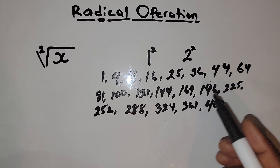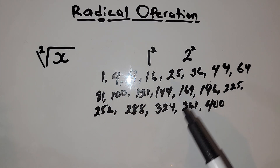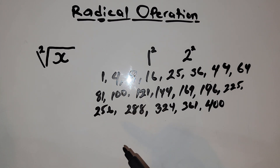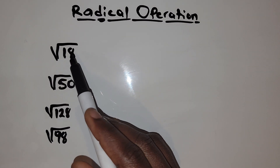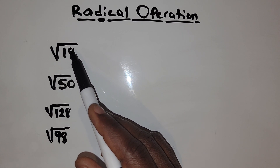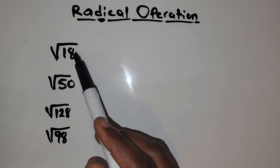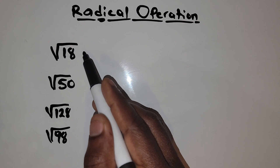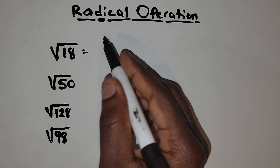So in order to do radical operations you've got to know your square roots for at least from 1 to 20. Now let's go into the problems. We have 18 under the radical sign. What two numbers can we multiply to give us 18? We have 2 and 9 — 2 times 9 gives us 18.